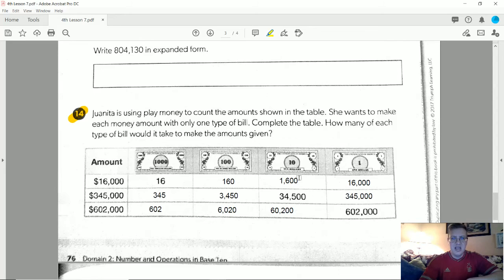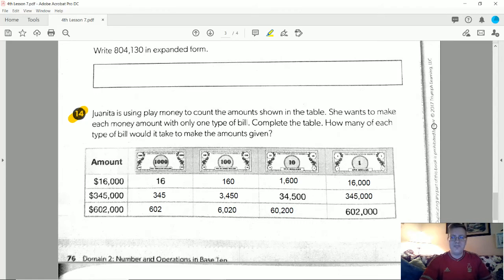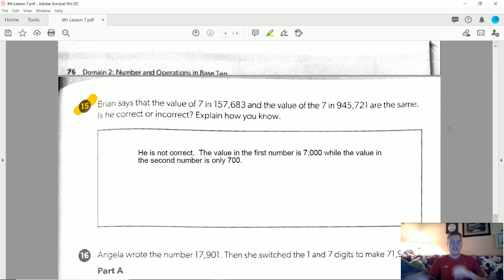So ten dollars, I would use 1,600, then 160 for the hundred dollar bills, and then 16 $1,000 bills. I can do that all the way across, so 34,500 ten dollar bills, there's 3,450 $100 bills, and 345 $1,000 bills, and then the same thing for the bottom number.